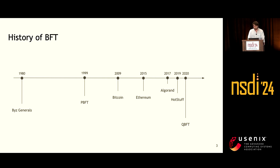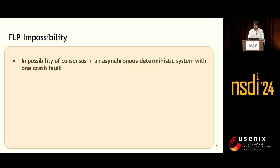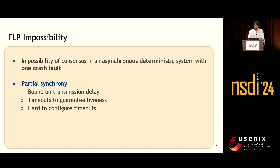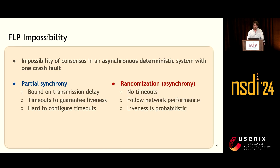Whenever one designs such a consensus protocol, they must eventually face the FLP impossibility, which states that it's impossible to achieve consensus in an asynchronous deterministic system even with a single crash fault. Except for cryptocurrencies that use proof-of-work with very weak guarantees, most protocols use partial synchrony to circumvent this impossibility — meaning assuming a bound on transmission delay and using timeouts to guarantee liveness. However, it's usually very hard to configure these timeouts. Set them too small and they keep firing, making progress very hard. Set them too large and the system becomes very susceptible to a single crash degrading performance. The alternative is to use randomized protocols instead of deterministic ones, achieving full asynchrony with no timeouts, so protocol performance just follows network performance. The current trend is towards these asynchronous and randomized protocols because they are usually more robust and a better fit for blockchains.